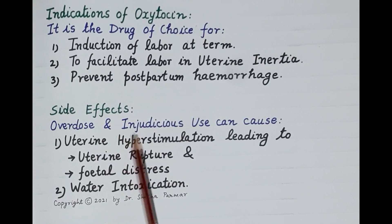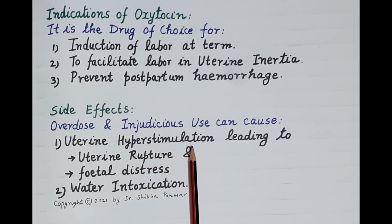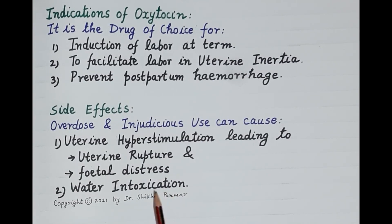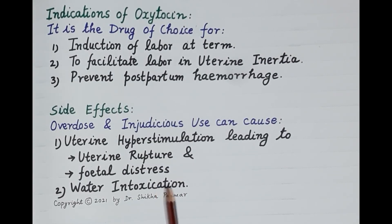Oxytocin is a very safe drug, but overdose and injudicious use can cause uterine hyperstimulation leading to uterine rupture and fetal distress. In high doses, it exerts antidiuretic-like action, causing water retention and water intoxication.